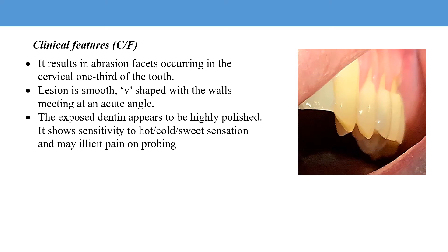Abrasion facets from tooth brushing have specific features: they occur in the cervical one-third of the tooth, the lesion is smooth and V-shaped with walls meeting at an acute angle, and the exposed dentine appears highly polished. The lesion shows sensitivity to hot, cold, and sweet sensations, and may elicit pain on probing.